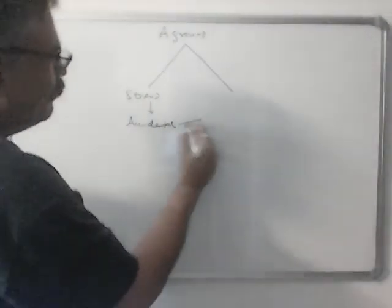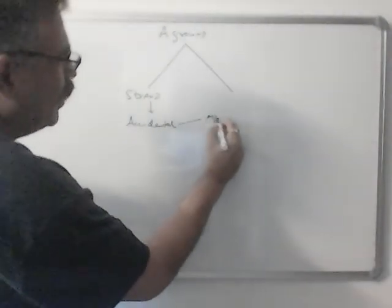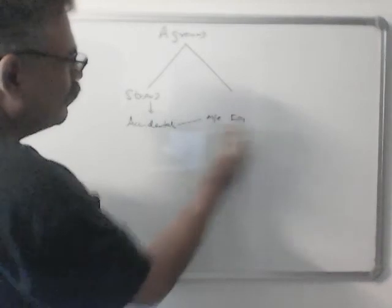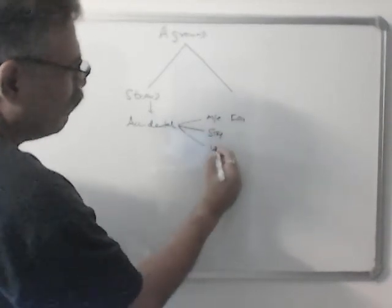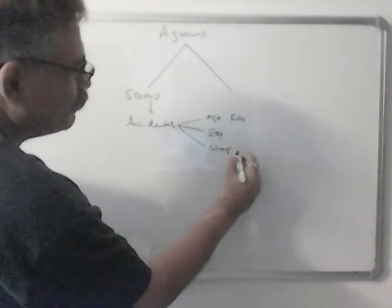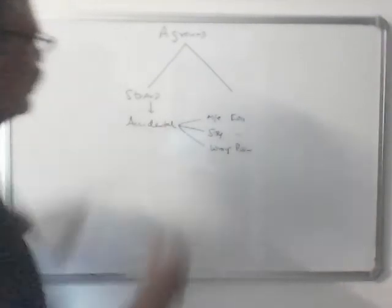For example, main engine failure, steering failure, plotted wrong position on the chart. This is the most common one.